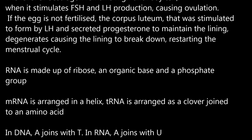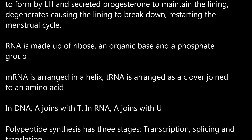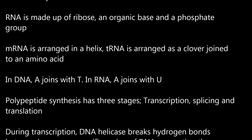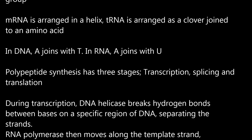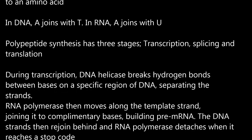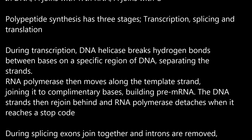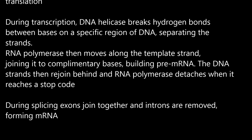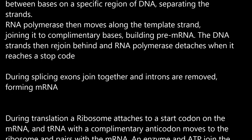RNA is made up of ribose, an organic base and a phosphate group. mRNA is arranged in a helix; tRNA is arranged as a clover joined to an amino acid. In DNA, adenine joins with thymine; in RNA, adenine joins with uracil. Polypeptide synthesis has three stages: transcription, splicing and translation. During transcription, DNA helicase breaks hydrogen bonds between bases on a specific region of DNA, separating the strands. RNA polymerase then moves along the template strand, joining complementary bases, building pre-mRNA. The DNA strands then rejoin behind, and RNA polymerase detaches when it reaches a stop codon.